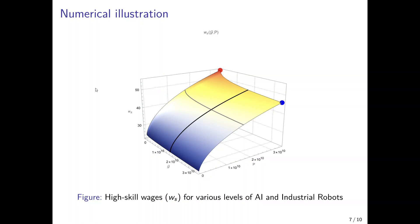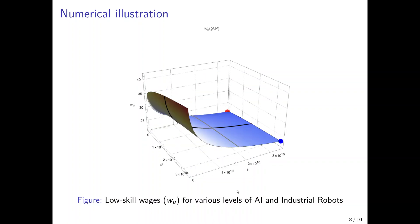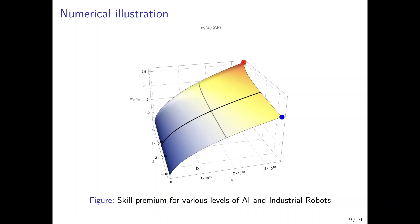In the following figures, we provide 3D plots for wages considering variations in industrial robots and artificial intelligence. The wage of high-skilled workers increases with industrial robot use and decreases slightly with the use of artificial intelligence. For low-skilled workers it is the opposite: wages decrease with industrial robots and increase slightly with artificial intelligence. The skill premium increases with the use of industrial robots and decreases with the use of artificial intelligence, consistent with our theoretical analysis.